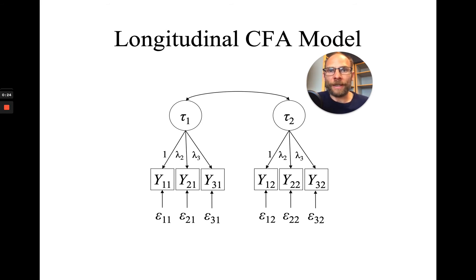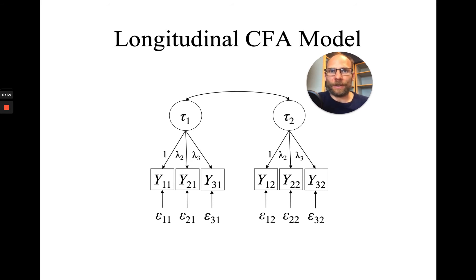One issue we frequently face when we have a multiple indicator design in a longitudinal study is that a model like this often doesn't fit. One reason can be that there are indicator-specific effects or method effects, meaning the same indicators are more highly correlated with themselves across time.